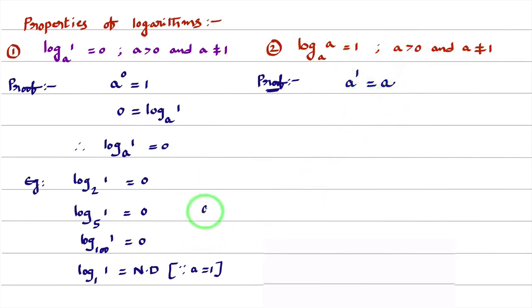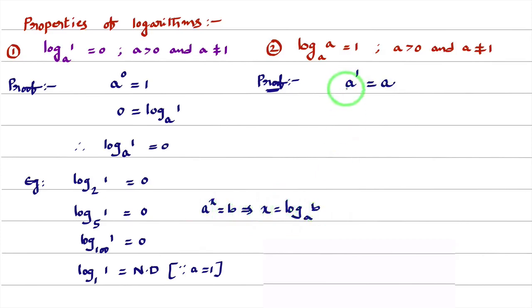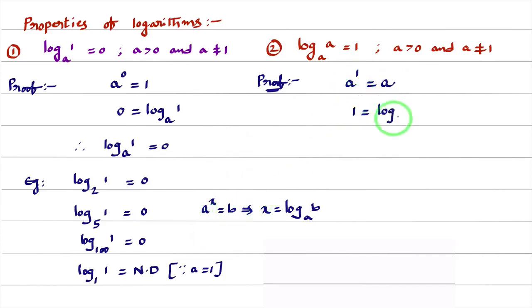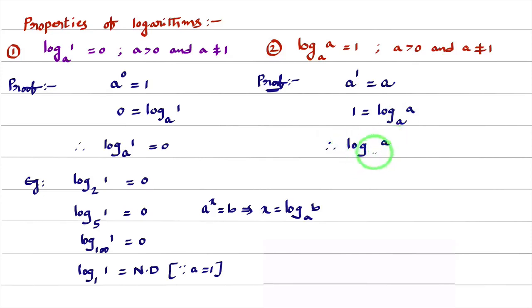From the definition of logarithm, if you see A power X equal to B, then X can be written as log B base A. Here, A power 1 equals A. Comparing this with the form A power X equal to B, it can be written as 1 equal to log A base A. Therefore, log A base A equals 1.